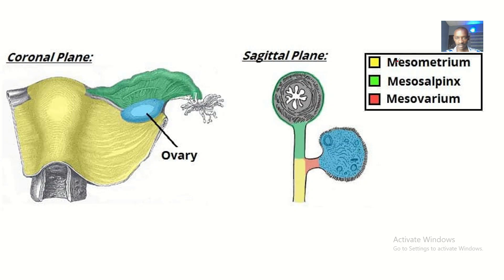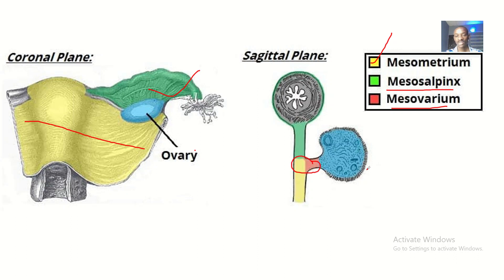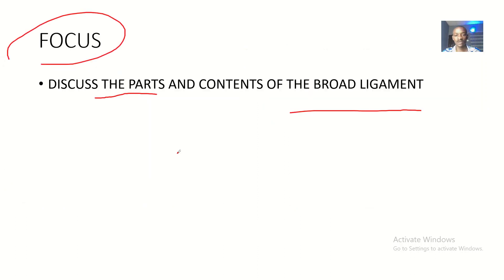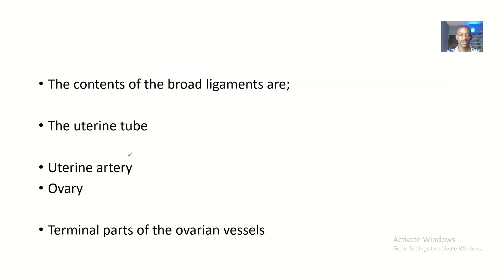On the diagram, the one in yellow is the mesometrium, and the one in green is the mesosalpinx. The suspensory ligament of the ovary is called the mesovarium — you can see it in red. It is actually suspending the ovary to the broad ligament. So those are the parts of the broad ligaments.